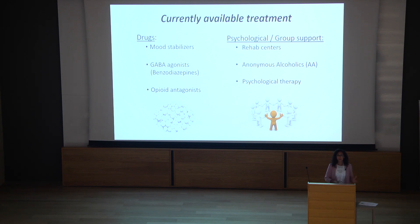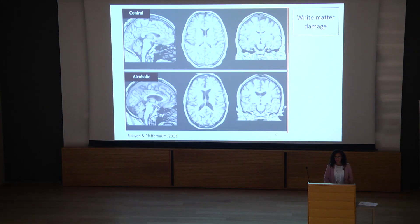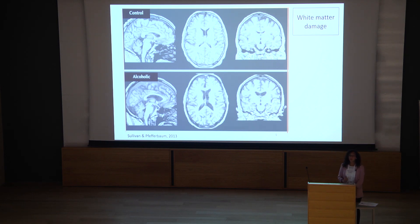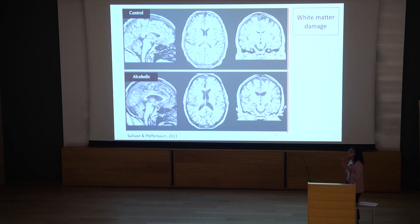How can we, as neuroscientists, find a better solution? Let's look at the brain of the alcoholic. Here you can see a structural MRI scan comparing controls versus alcoholics. White matter is extremely vulnerable to the consumption of large amounts of alcohol. You can see atrophy in the cerebellum, a bit in the temporal lobes, extensive damage in the prefrontal cortex, and also in the nucleus accumbens.